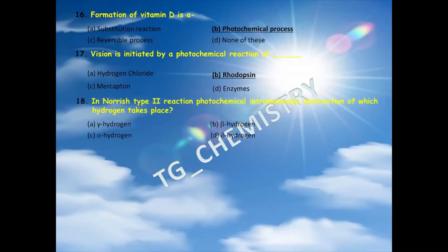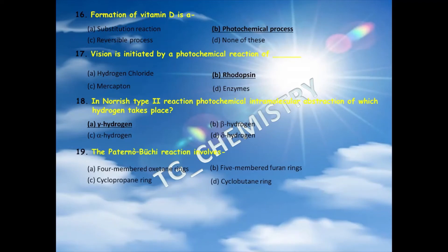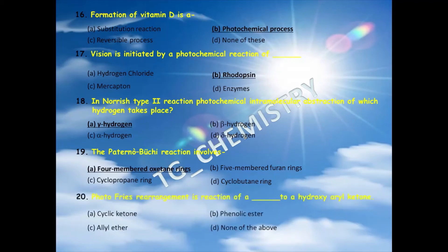Eighteenth question: in Norrish type 2 reaction, photochemical intramolecular abstraction of which hydrogen takes place? Options: A) gamma hydrogen, B) beta hydrogen, C) alpha hydrogen, D) delta hydrogen. The right answer is option A — gamma hydrogen abstraction. Nineteenth question: Paterno-Büchi reaction involves which ring intermediate? The answer is option A — a four-membered oxetane ring.